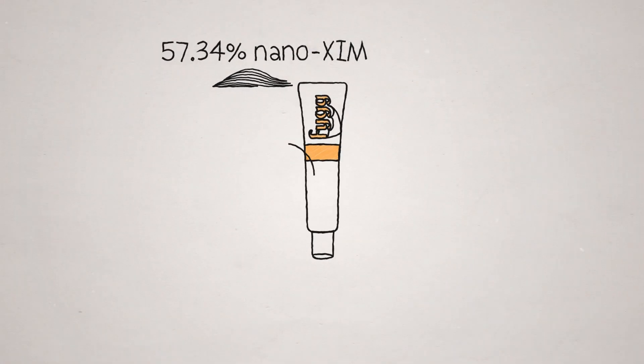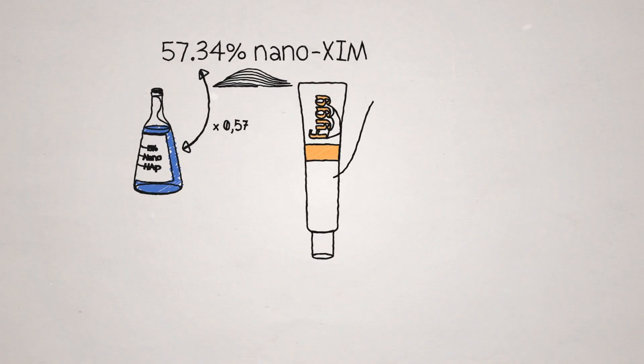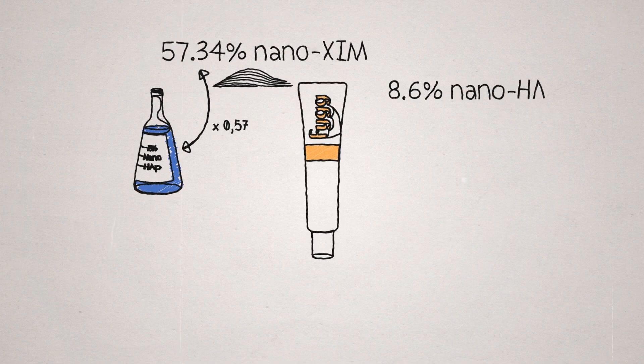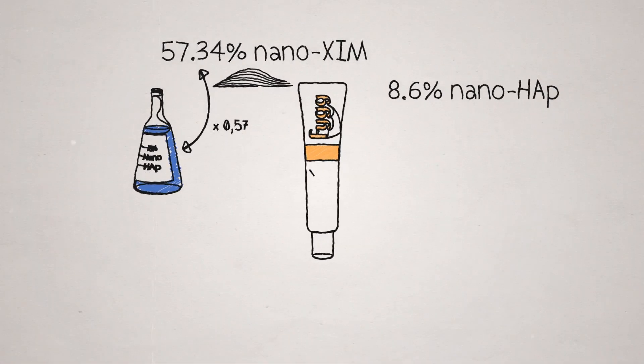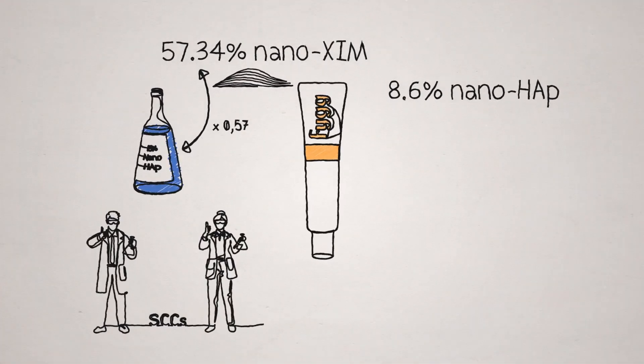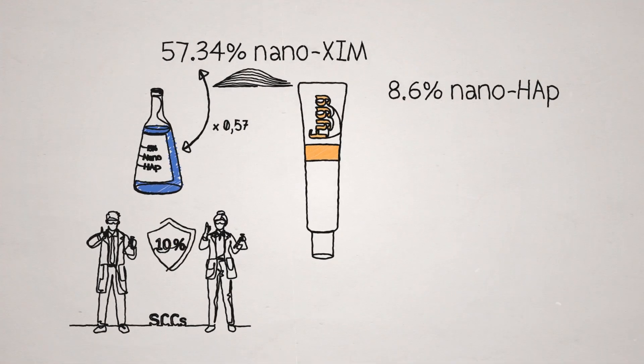Starting with that same 15.5% nanohydroxyapatite solution and multiplying by 57.34%, or 0.5734, results in varnish with 8.6% nanohydroxyapatite in the final product, still within the SCCS standards of 10% or below for safety,